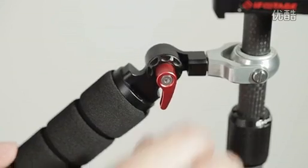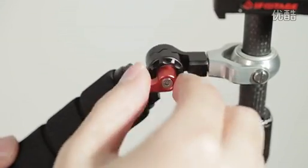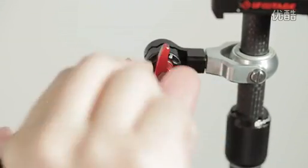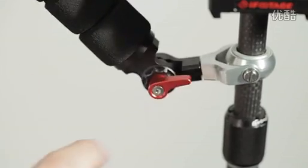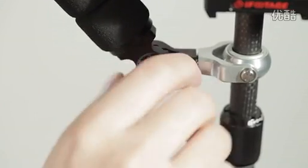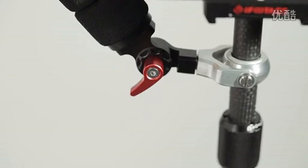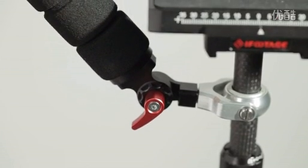The Wildcat has a system where you can actually adjust the angle of the handle by unlocking, changing it, and locking it back up. This is especially useful for different high angle or low angle shots.